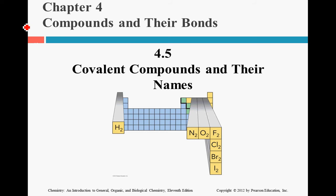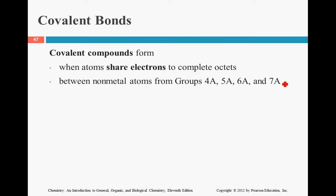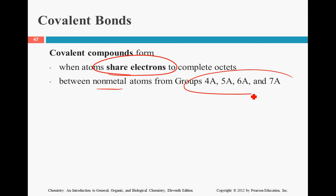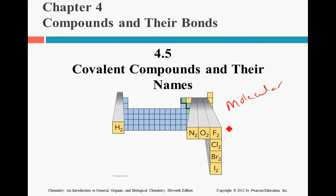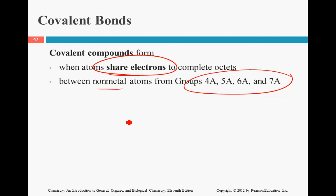We will now begin our discussion on covalently bonded or molecular compounds. With molecular compounds, what we're really referring to are atoms that are sharing electrons. Those tend to be non-metals. Once we get into organic chemistry in a month from now, we're going to start naming all different types of things that deal with carbon. This is essentially everything else.